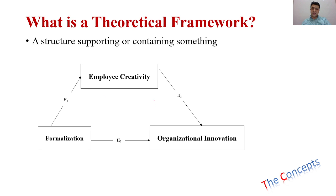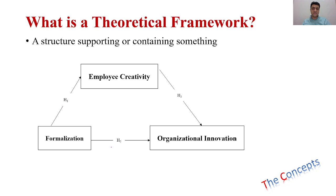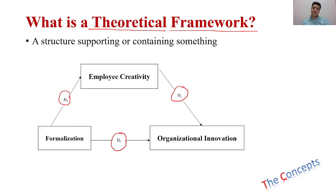Theoretical frameworks can be very complex or very simple. In this theoretical framework, we are putting multiple relationships into one framework. Formalization has a relationship with innovation, formalization has a relationship with employee creativity, and employee creativity has a relationship with innovation. So in this theoretical framework we are leveraging about three or four theories. When theories are presented in a framework, that is known as a theoretical framework. We also develop our hypotheses and then make our framework. This is what we get from the literature, and we are trying to come up with a theory or relationship. When we present our theories or relationships in these boxes with arrows, that becomes our theoretical framework.